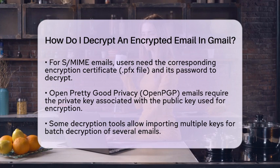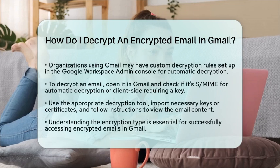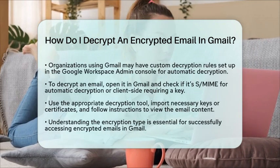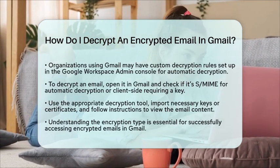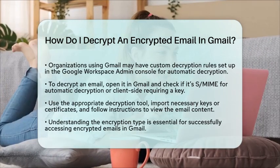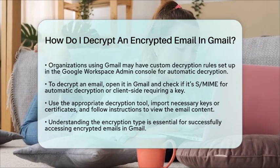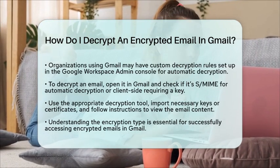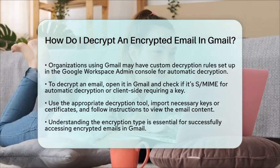To decrypt an encrypted email in Gmail, follow these practical steps. First, open the encrypted email in your Gmail client. If it is encrypted with S/MIME and you have the necessary permissions, Gmail will handle the decryption automatically. If the email is encrypted client-side or with third-party encryption, you may see a message indicating that the email is encrypted and requires a decryption key or password. Next, use the appropriate decryption tool or plugin compatible with your encryption method. Import your private keys or certificates as required by the tool and follow the instructions to decrypt and view the email content.